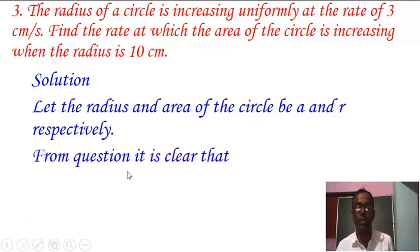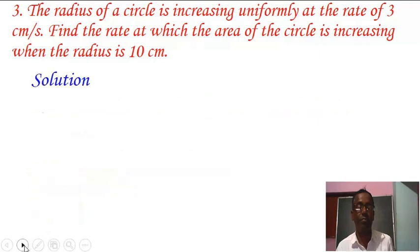From the question it is clear that dr/dt equals 3 cm per second. dA/dt equals what? We know that the area of the circle A equals π r squared.